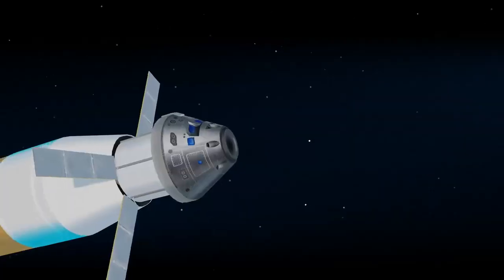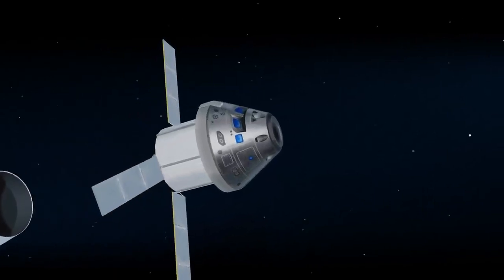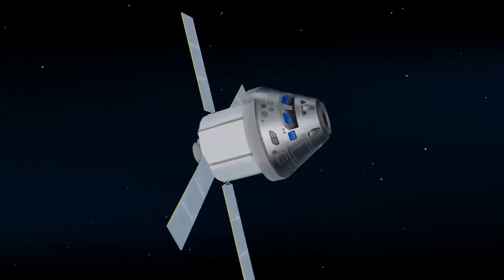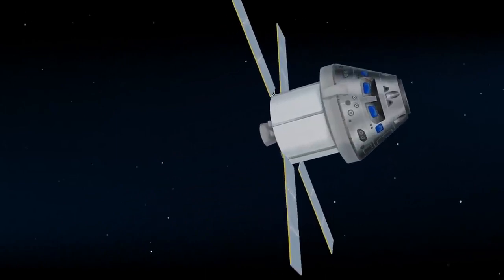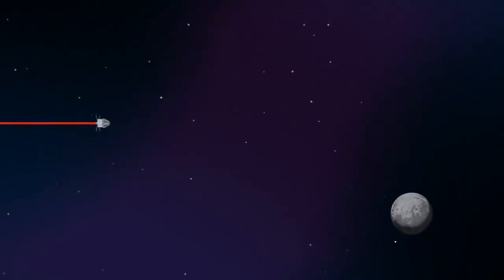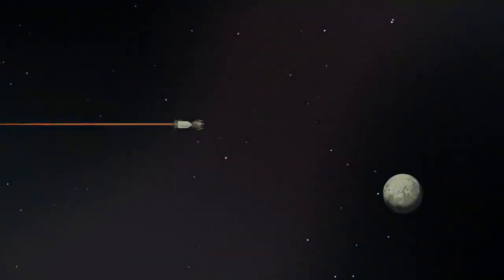Once this burn is complete, the upper stage of the SLS is jettisoned, and the crew aboard Orion coast for several days toward all that awaits them at the Moon. Approaching the Moon, we see the fundamental differences between Artemis and Apollo.